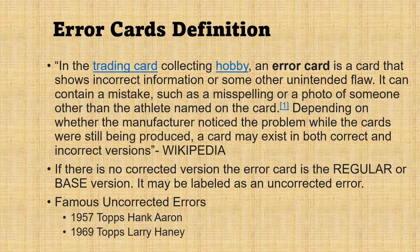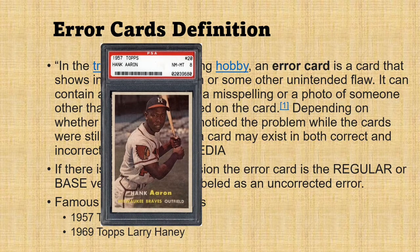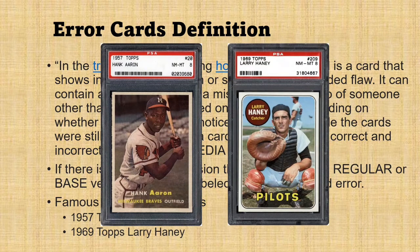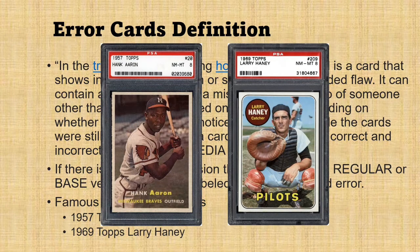Some famous uncorrected errors were the '57 error, which is a reverse negative — the same way for the Larry Haney '69. Both of these are reverse negatives; there is no such thing as a left-handed catcher. But none of these were caught, none of them were corrected, and therefore they are uncorrected errors that don't make the cards worth any more, because they are not any more rare.